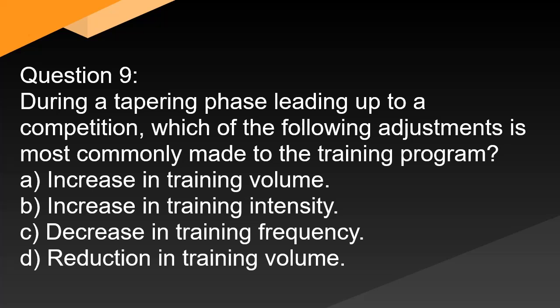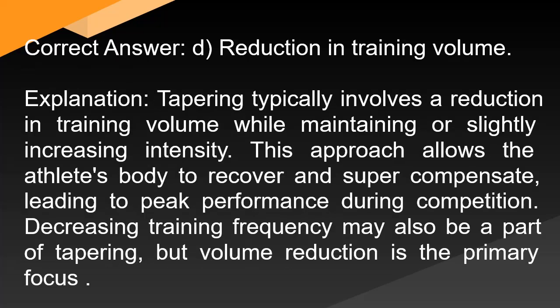Question 9: During a tapering phase leading up to competition, which adjustment is most commonly made to the training program? A. Increase in training volume. B. Increase in training intensity. C. Decrease in training frequency. D. Reduction in training volume. Correct answer: D. Reduction in training volume. Tapering typically involves a reduction in training volume while maintaining or slightly increasing intensity. This approach allows the athlete's body to recover and supercompensate, leading to peak performance during competition. Decreasing training frequency may also be part of tapering, but volume reduction is the primary focus.